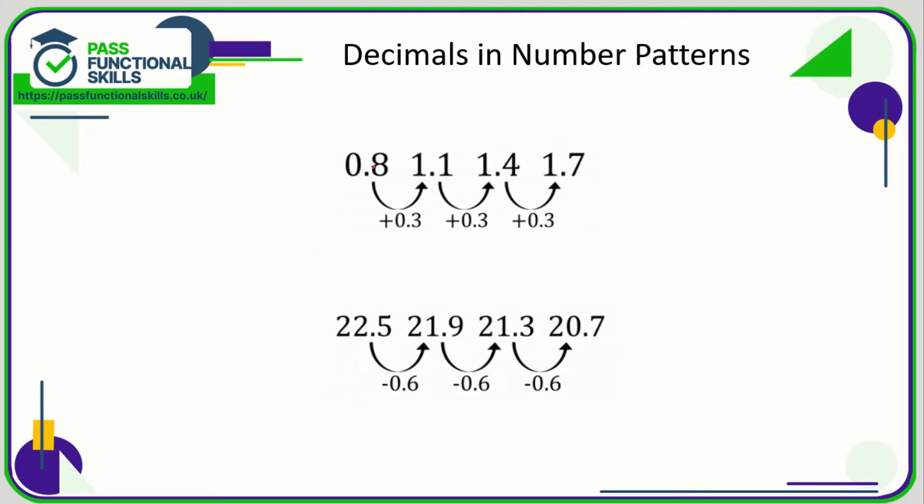So here we are going up 0.8, 1.1, 1.4, and again if we're not sure what to add on, let's just do 1.1 take away 0.8. 1 take away 8 can't be done, the 1 becomes 0, this 1 becomes 11. 11 minus 8 is 3. Should have made sure that the decimal point is in line. 0 minus 0 is 0. So here the pattern is we're adding 0.3 to each number.